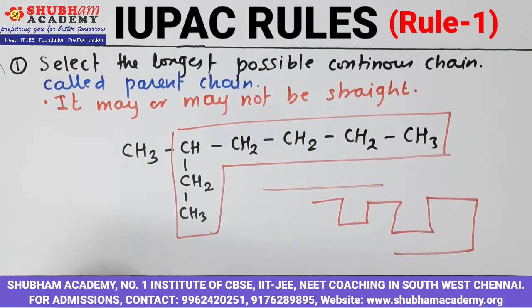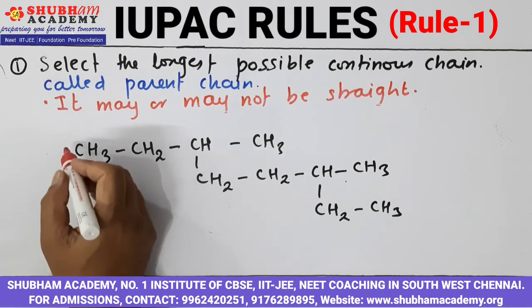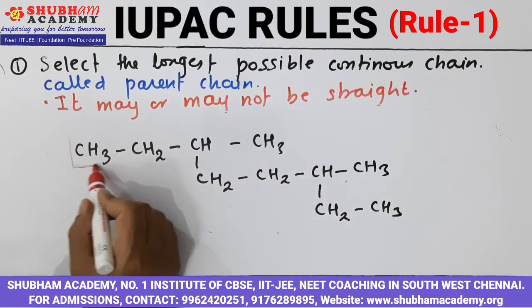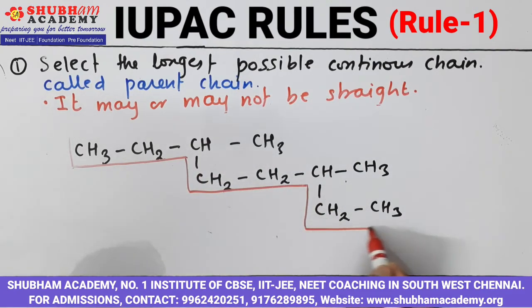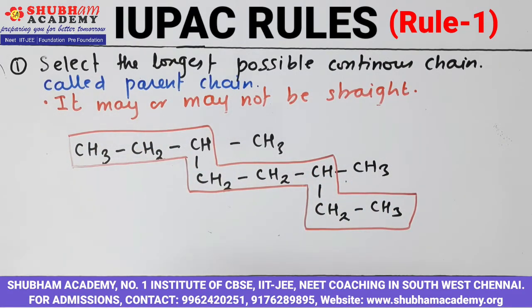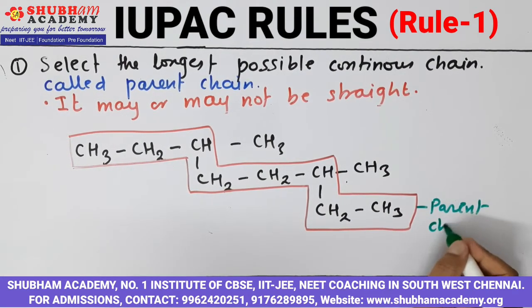One more example we will see. This is the compound given to you. You have to select the longest chain which contains the maximum number of carbon atoms. One more thing to keep in mind is that this chain should be only of carbon atoms — no atom other than carbon will form the parent chain. Counting gives 1, 2, 3, 4, 5, 6, 7, 8. So in this case, this will be my longest chain. You can see here the longest chain is not straight but it is zigzag.